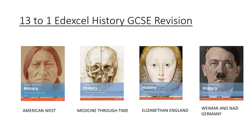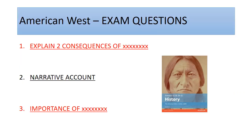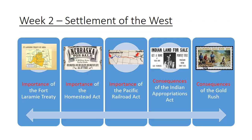Welcome to week two of our Edexcel History GCSE revision. I'm going to carry on looking at the American West today. Following on from last week, these are the three main questions: explain two consequences, the narrative account question, and the importance of. There are basically five questions and I'm going to go through them briefly, focusing first on the importance question and then the consequences question.